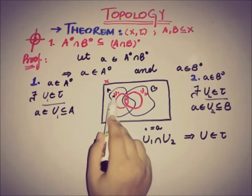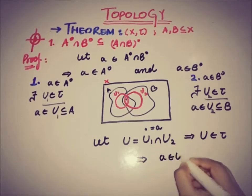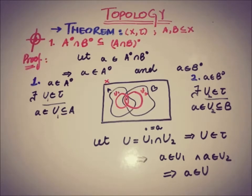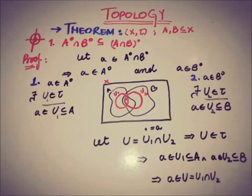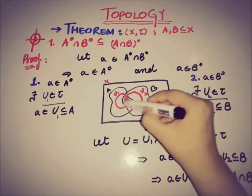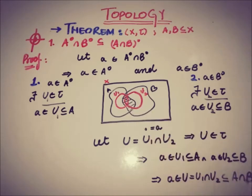Since U1 contains point 'a' and U2 also contains point 'a', 'a' belongs to U = U1 ∩ U2. Because U1 is a subset of A and U2 is a subset of B, we can write that U is a subset of A ∩ B. Since U1 and U2 are both open, their intersection U is also open and belongs to the topology.